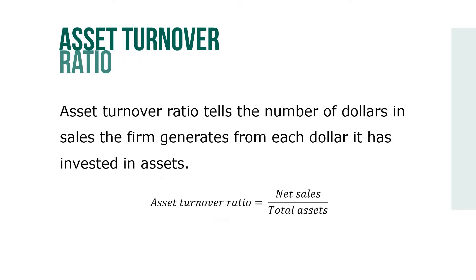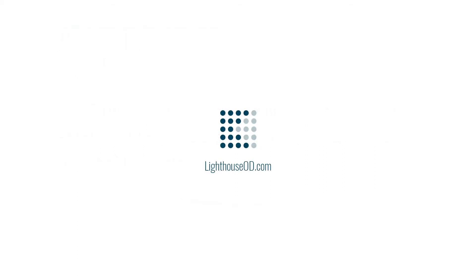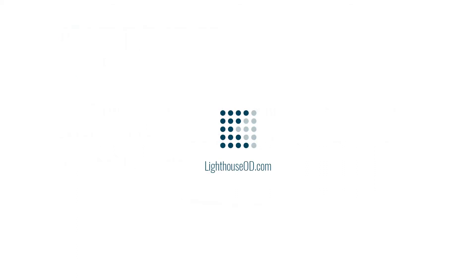Asset turnover ratio tells the number of dollars in sales the firm generates from each dollar it has invested in assets, where asset turnover ratio equals net sales over total assets. This ratio is an important measure of a company's efficiency in managing its assets.